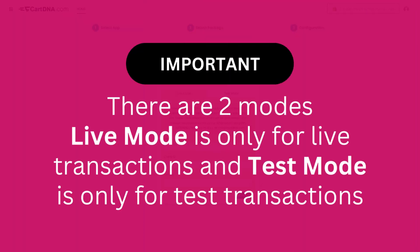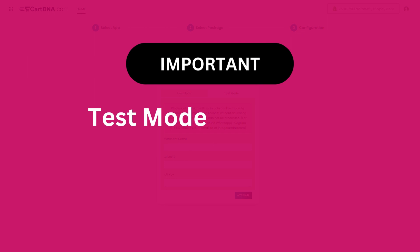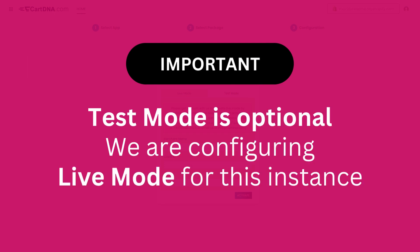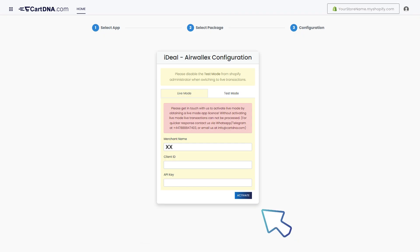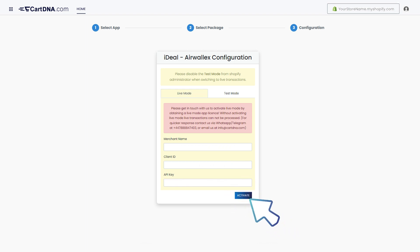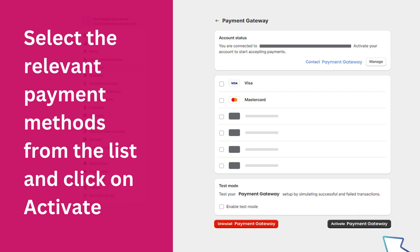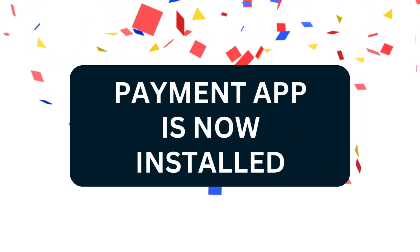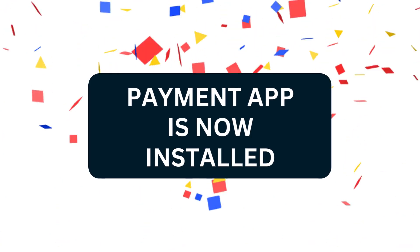Click on the Select Plan button. Important: there are two modes — Live Mode is only for live transactions, and Test Mode is only for test transactions. Test mode is optional. We are configuring Live Mode for this instance. Enter the credentials extracted from your iDEAL payment account and click on Activate. Then select the relevant payment methods from the list and click on Activate. Your payment app is now installed.